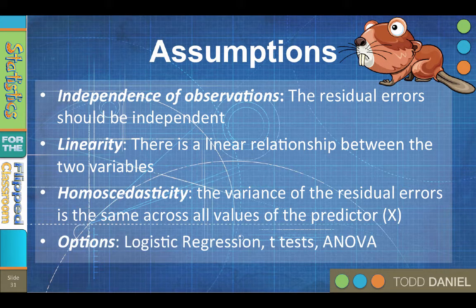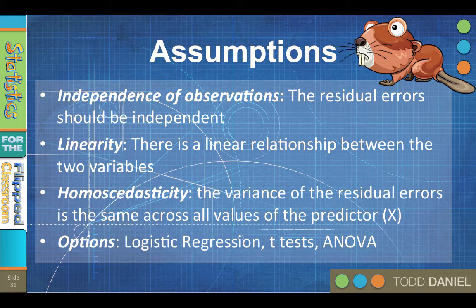If certain of these assumptions are violated, you may not be able to use linear regression, but you still have options. If the outcome variable is dichotomous, coded 0 and 1, you can use a logistic regression. If the predictor variable is categorical, you can use a t-test or a one-way ANOVA, both of which are variations on that same general linear model.